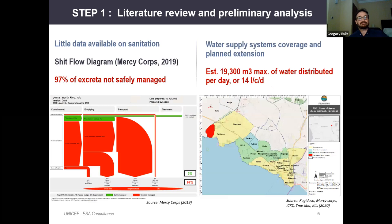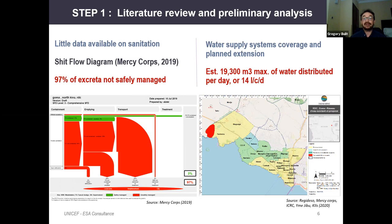The literature review stage also provides some first elements of response. Not all health zones have the same access to piped water services. Overall, the quantity available through water distribution systems — whether through water trucking, bicycle, or pipe — is around 14 liters per day per person, which is extremely low. The study also confirms that safe management of excreta in Goma is extremely limited, with each neighborhood having different ways of managing excreta, some resulting in higher exposure than others.